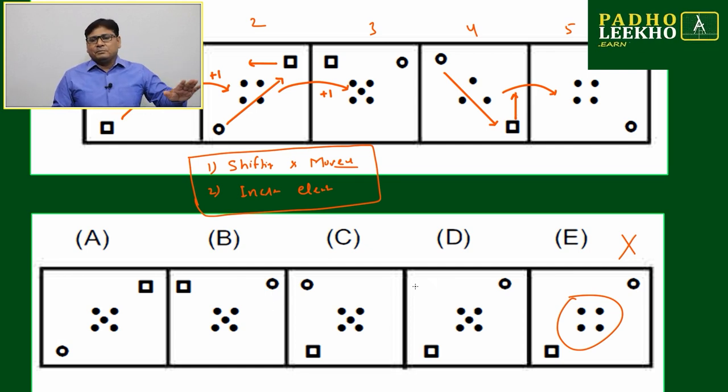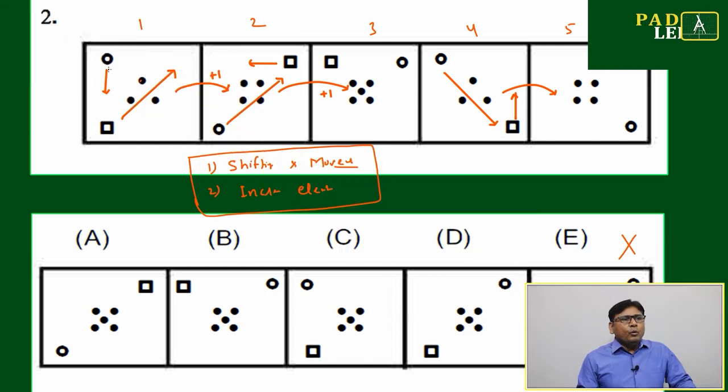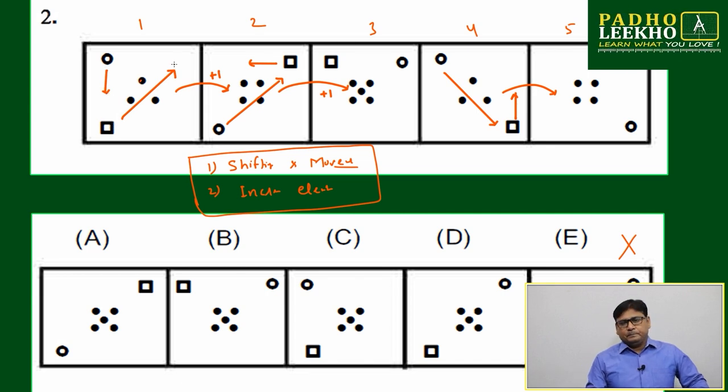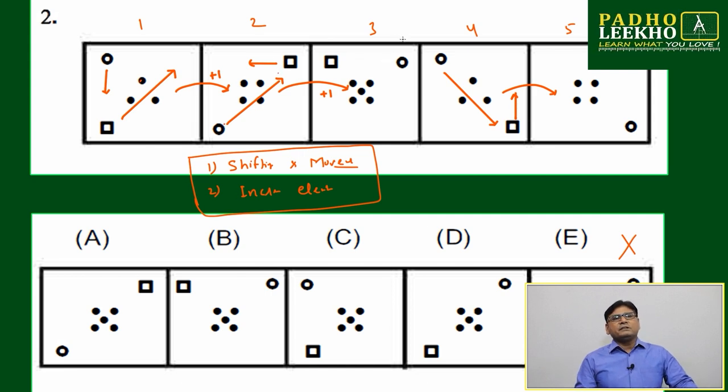Now what is happening? One element, this circle, is moving downward and this square is moving diagonally. Next what will happen? Which has moved downward or straight along the side of the square or frame will move diagonally, and another element will move along the side. From here this will move here, this will move here. Up to three we are getting a perfect figure.